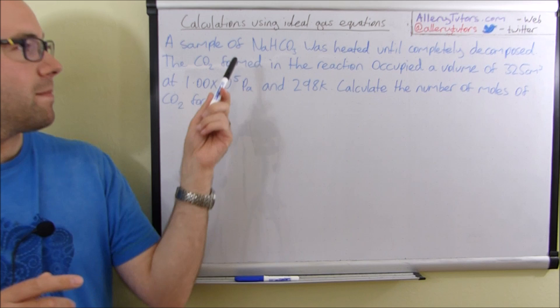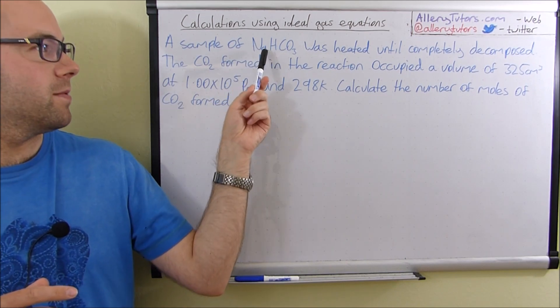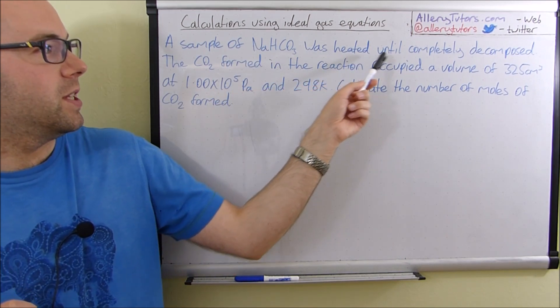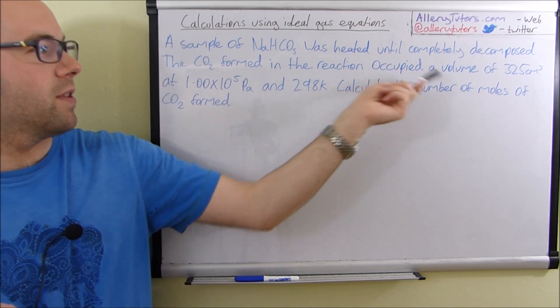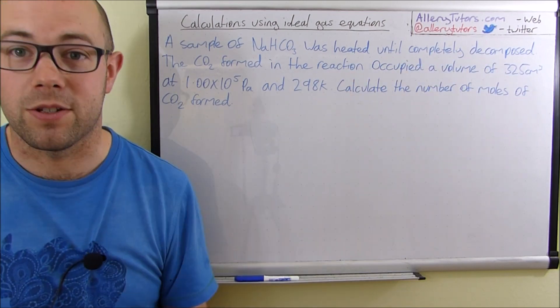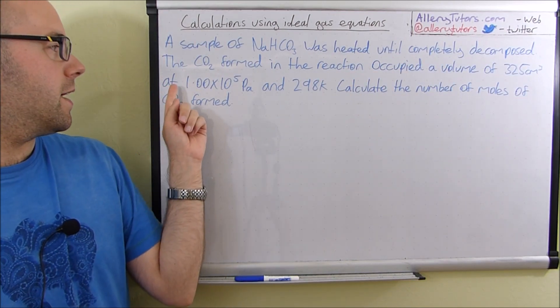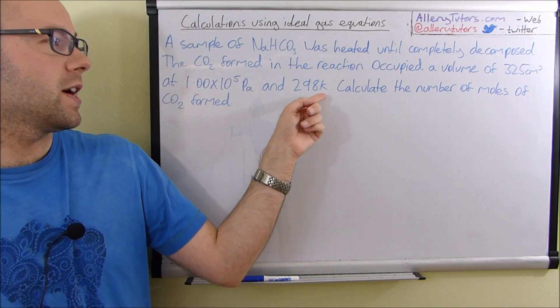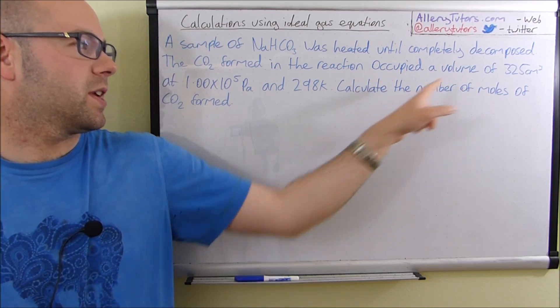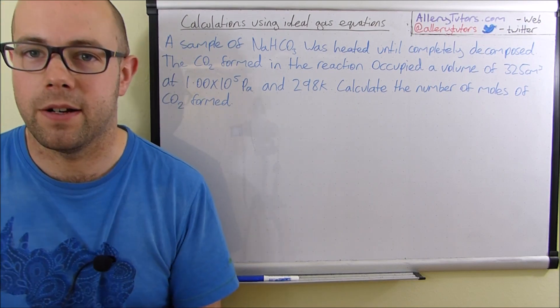So the question says a sample of sodium hydrogen carbonate, which is NaHCO3, was heated until completely decomposed. The carbon dioxide formed in the reaction occupied a volume of 325 centimeters cubed at 1 times 10 to the 5 pascals of pressure and 298 Kelvin. And what I want us to do is calculate the number of moles of carbon dioxide formed.